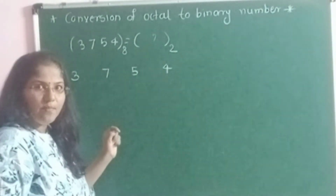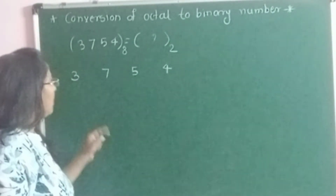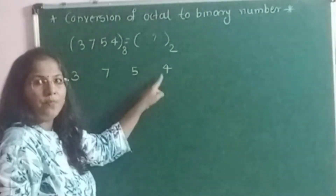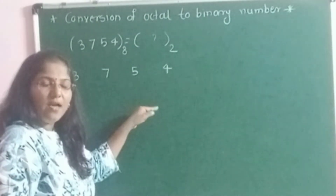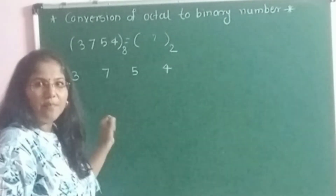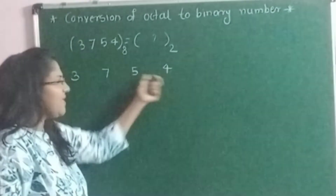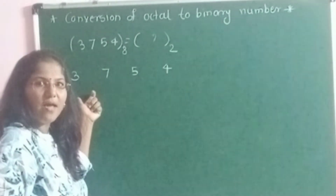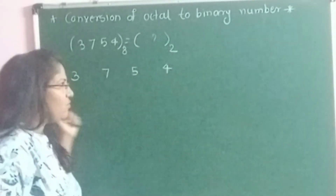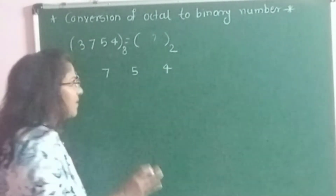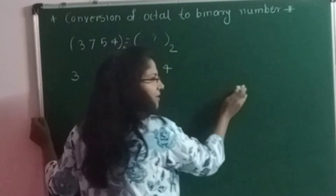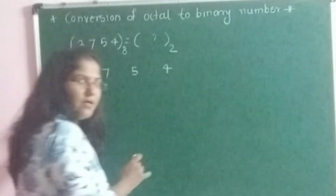The next step is to convert each digit given in the octal number system into its equivalent binary number of 3 bits. We place each digit by its equivalent 3-bit binary number. There is a very simple shortcut method.